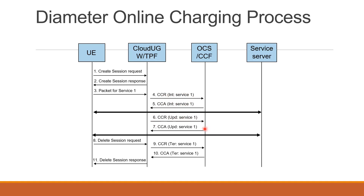The initial update request will request for quota, and update service response one will send that quota. Subsequent update requests will request updated quota and inform about quota usage. For example, if you switch to YouTube, which has a different rating group (say RG28), the CCR update request will mention that RG28 is YouTube and quota is needed for RG28. OCS checks that quota for rating group 28 is available and sends back a CCA update response assigning the specific quota for RG28. Subsequent updates can be for new quota requests or existing quota updates.